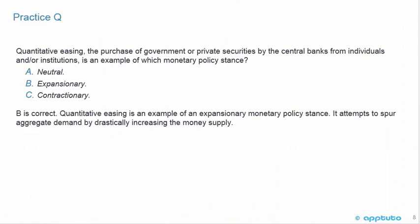B is correct. Quantitative easing is an example of an expansionary monetary policy stance. It attempts to spur aggregate demand by drastically increasing the money supply. We saw quantitative easing in the United States after the crisis in 2008. That's the last slide for this LOS.